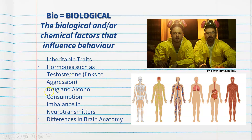It could also be that a person was under the influence of drugs and alcohol, which may have contributed to their criminal behaviour. An imbalance in neurotransmitters within the brain, processing in terms of the prefrontal cortex, and differences in brain anatomy in terms of processing information and emotional control are all biological and/or chemical factors that may contribute to the likelihood of someone engaging in criminal behaviour.